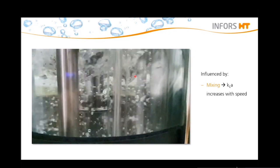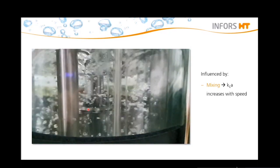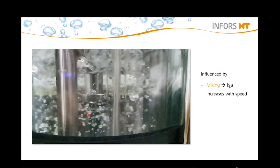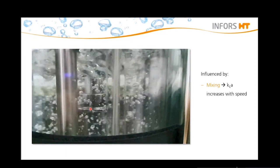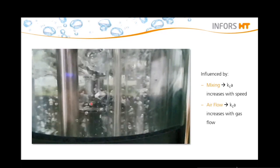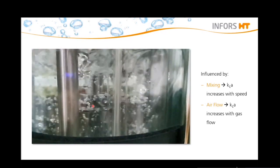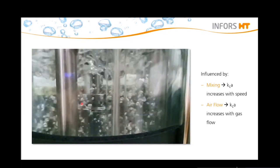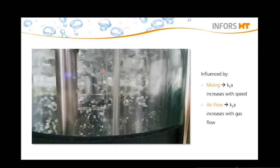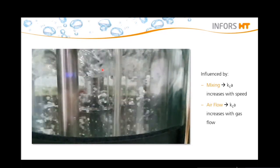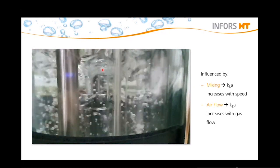Here I have prepared a video showing how the impeller and stirring speed influence the bubble size and thereby also the KLA. The KLA increases with increasing stirrer speed since the bubbles are shredded into smaller bubbles, as you can see here. This enables better oxygen transfer and the bubbles are evenly spread inside the bioreactor. Moreover, the KLA increases with increasing gas flow rate because then you have more bubbles.